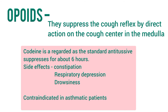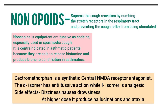Side effects of opioids include constipation, and at higher doses, respiratory depression and drowsiness. They are contraindicated in asthmatic patients. Ethylmorphine and folcodeine generally show less constipating effect than codeine.